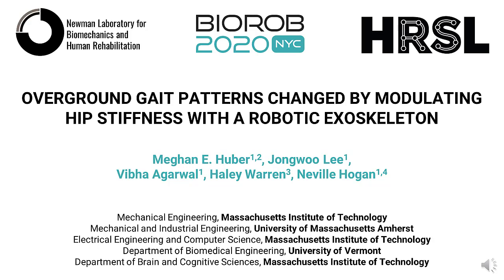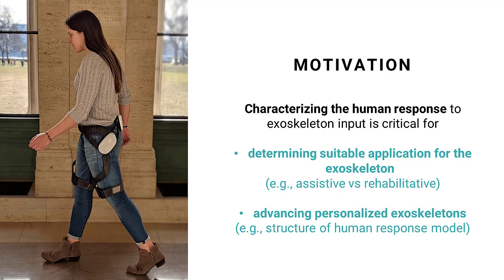Lower limb exoskeleton technology has dramatically improved in the past several decades, and nowadays, with advances in mechatronics, batteries, and mechanical and user design, we have exoskeletons that are lightweight, portable, and easy to wear. The Samsung hip exoskeleton, as shown here, is just one example of the many devices that are out there now.